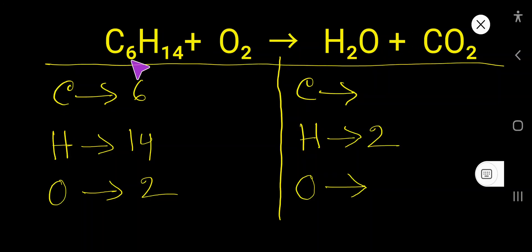How to balance C6H14 plus O2 that produces H2O plus CO2. On the right-hand side, the number of hydrogen is 2. The number of oxygen here is 1, and here we have 2 oxygen.